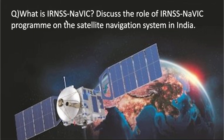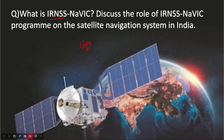The first question we are going to discuss is about the Indian Regional Navigation Satellite System, also known as the NAVIC system. This is India's own navigation satellite system. Earlier we used to depend on GPS — Global Positioning System — for our navigation needs. However, ever since we have our own navigation satellite system, IRNSS is a constellation of seven satellites in both geosynchronous orbit and geostationary Earth orbit. In this context, we need to discuss the role of the IRNSS NAVIC program on satellite navigation in India.